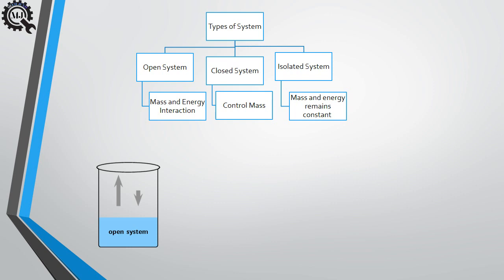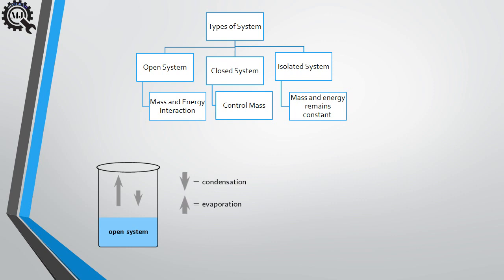Now let's see the closed system. It is defined as a system in which energy transfer can take place, but there is no mass transfer. We take the same container with the same amount of heat, but this time we cover the container. We observe that energy transfer is taking place, but the water after converting into steam is not getting outside to the surrounding — meaning in a closed system, mass is constant.